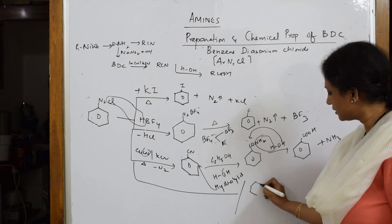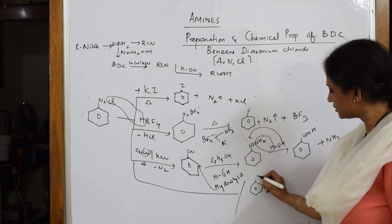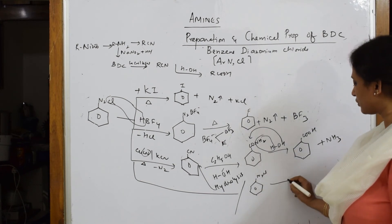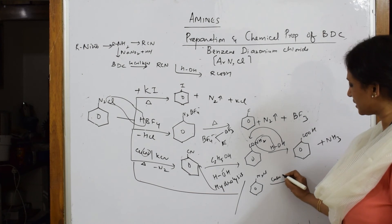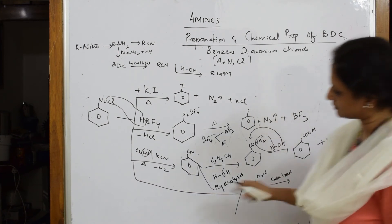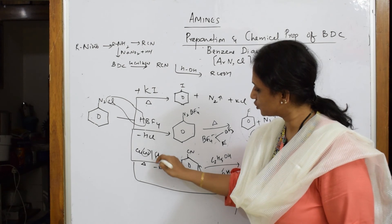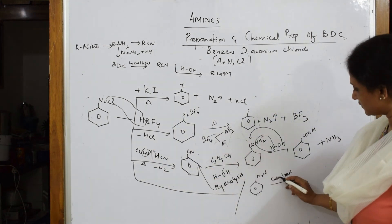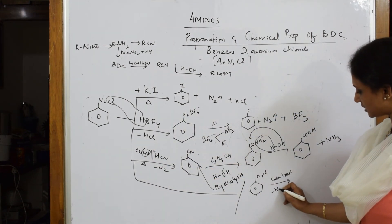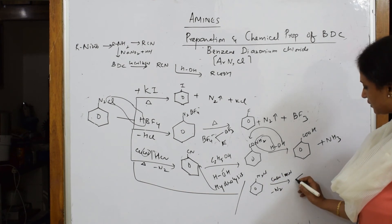First I am going to take BDC, N2Cl. I am going to introduce CuCN with HCN. Does it like KCN over HCN? No problem. This will replace. You get minus N2, CuCl, and you get cyano group.